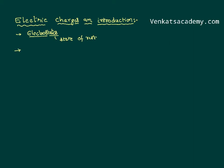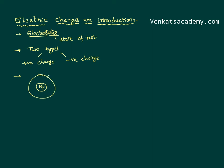It has been observed right from the earlier days that charges are of two types: one is a positive charge and the other one is a negative charge. To explain this at the atomic and subatomic level, an atom consists of a nucleus. Inside the nucleus there are neutrons and protons, and there are orbits around it in which electrons are revolving. The proton has a positive charge and the electron has a negative charge.